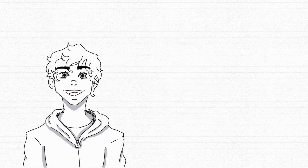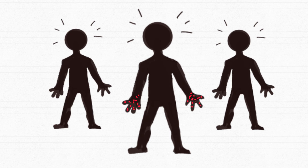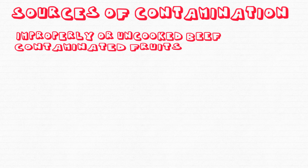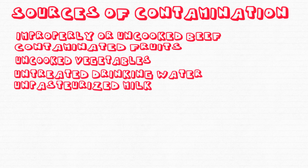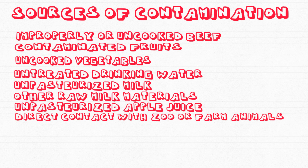Now I'll tell you about E. coli. E. coli is a type of bacteria that is commonly found in the intestines of humans and animals. There are many strands of the bacterium. E. coli has been identified as dangerous to people. E. coli is transferred when a person has not washed his or her hands after leaving the washroom. The particles of the excrement can transfer E. coli from their hands onto their food, contaminating themselves and others. You should always wash your hands, especially before handling food. Sources of contamination include, but are not limited to, improperly cooked beef, contaminated fruits, uncooked vegetables, untreated drinking water, unpasteurized milk and other raw milk materials, unpasteurized apple juice, and direct contact with animals from zoos and farms.